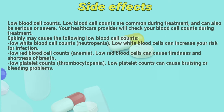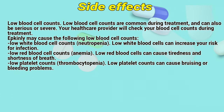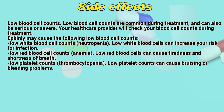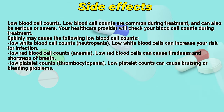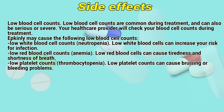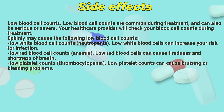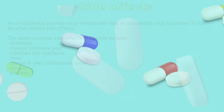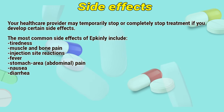Low blood cell counts are common during treatment and can also be serious or severe. Your healthcare provider will check your blood cell counts during treatment. Epkenly may cause the following low blood cell counts: low white blood cell counts, neutropenia, which can increase your risk for infection; low red blood cell counts, anemia, which can cause fatigue or shortness of breath; and low platelet counts, thrombocytopenia, which can cause bruising or bleeding problems. Your healthcare provider may temporarily stop or completely stop treatment if you develop certain side effects.